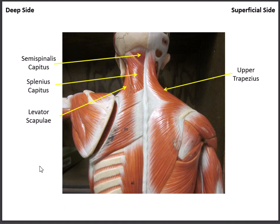Here are those same muscles on the torso model. Semispinalis capitis — when contracted bilaterally, extends the head. Splenius capitis — contracted bilaterally, extends the neck; one side contracts, turns the head to the same side. Here's the levator scapulae going to the superior angle of the scapula, elevating it. And finally, the most superficial muscle running up the neck is the upper trapezius, which causes the shoulder shrug and elevates the shoulder.